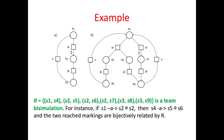In this example, relation R is a team bisimulation. To check this, consider the first pair. If S1 does A and reaches the marking S2 plus S2, then S4 can reply by reaching the marking S5 plus S6, and these two markings are bijectively related by R.